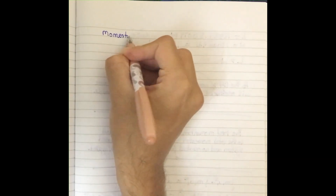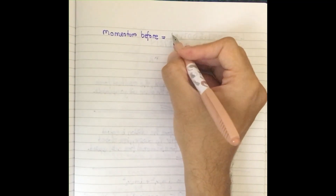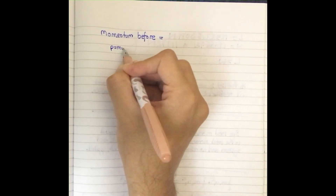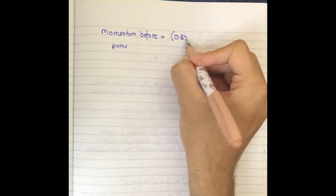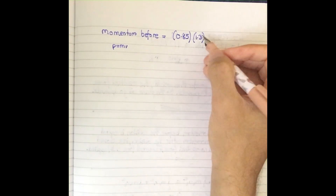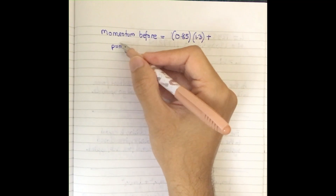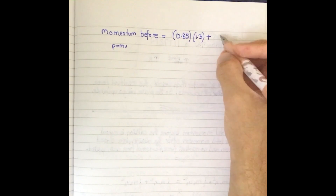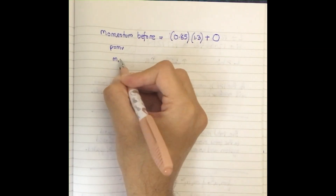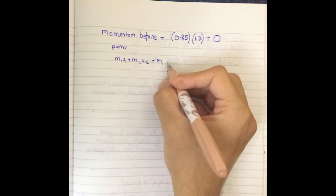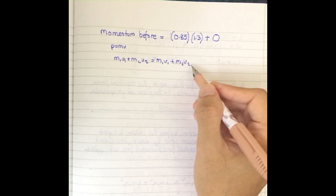Momentum before the collision: p = mv. For object A, we use 0.85 kg (its mass) times its initial velocity. Object B is stationary, so its velocity is zero and its momentum contribution is zero. The full conservation formula is m₁u₁ + m₂u₂ = m₁v₁ + m₂v₂, where u is initial and v is final. Ball A is v₁ and ball B is v₂.